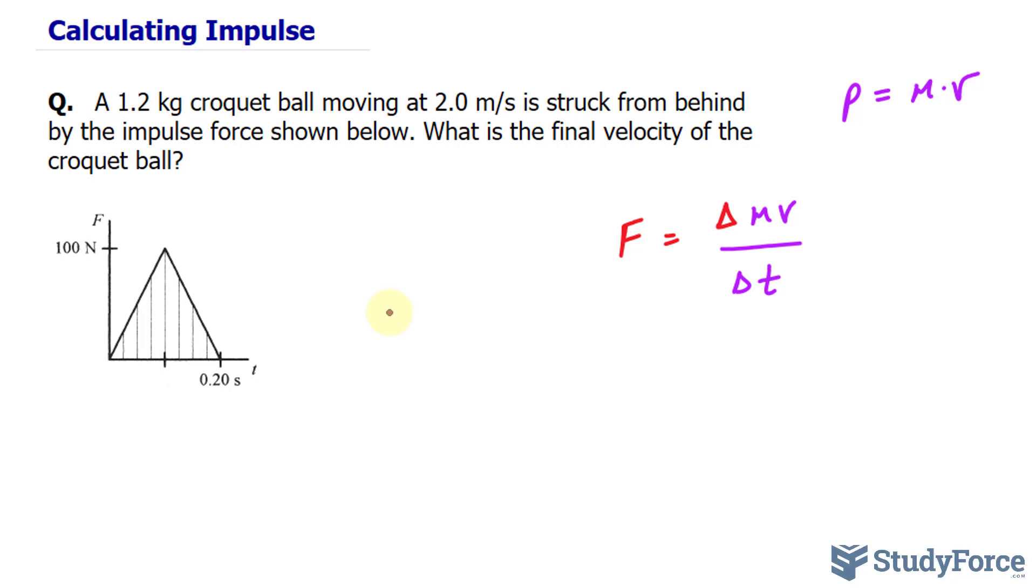The first thing I want to do is find the initial momentum, because in order to use this formula, remember that the change in MV means MV final minus MV initial. So let's begin by finding MV initial, and from there we can work this out.